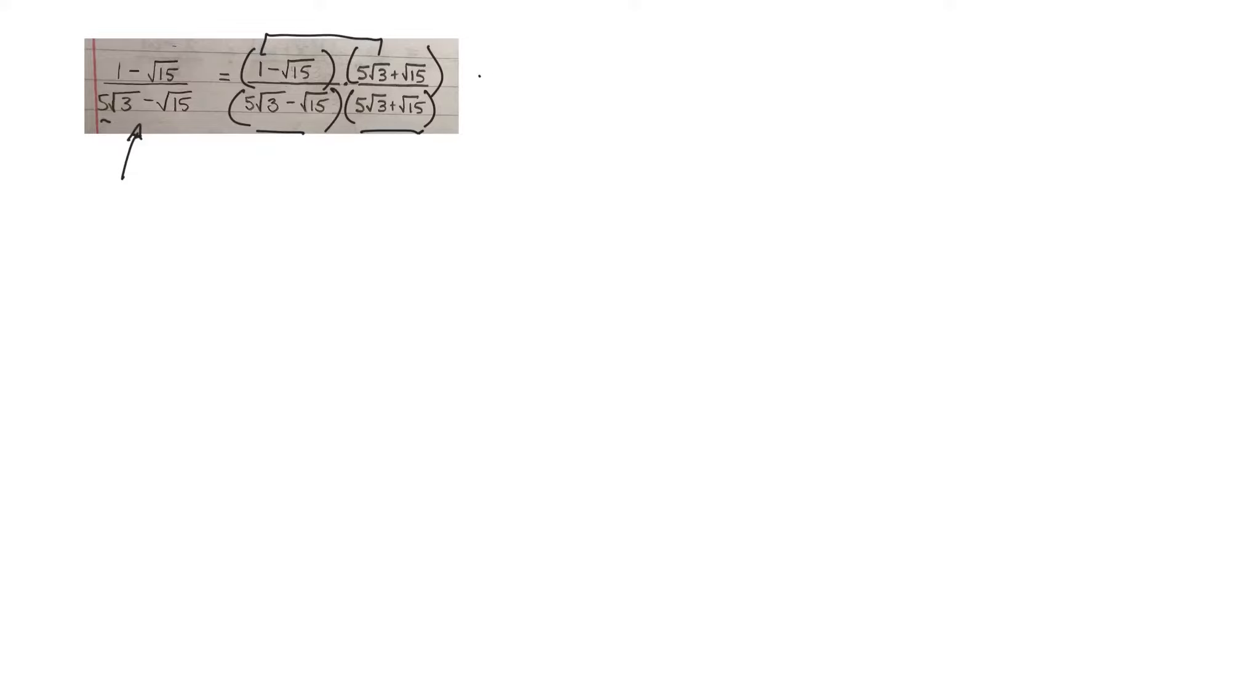So it's a foil. So 1 times 5 root 3, 5 root 3. Then 1 times root 15 would be a positive root 15. And minus root 15 times 5 root 3.